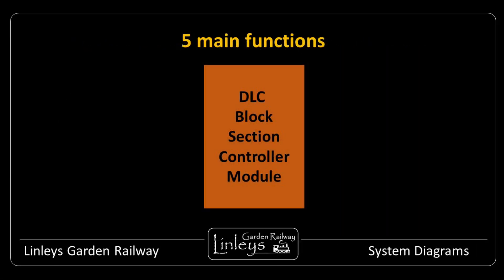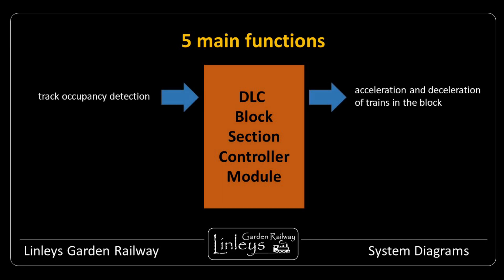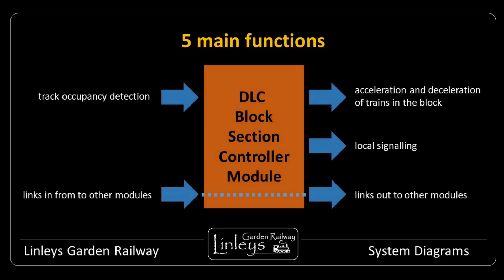The block section controller has five main functions. These are track occupancy detection, acceleration and deceleration of trains in the block, local signaling, partnership working with other blocks and control modules, and dealing with commands from the signal box input switches.